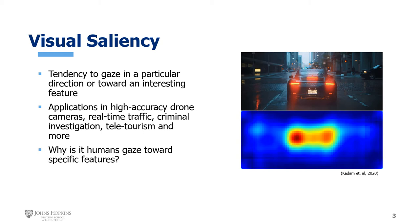In order to appreciate the algorithms we'll be proposing, it is important to understand visual saliency and its potential in computer vision. Specifically, uncovering the nuances behind visual saliency — the tendency to gaze in a particular direction or toward a particular object — is critical in understanding what and why the human mind focuses on specific features in that field of vision. There's a wide variety of applications, such as robotic agents, teletourism, high accuracy drone cameras,